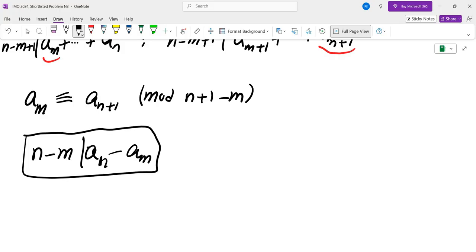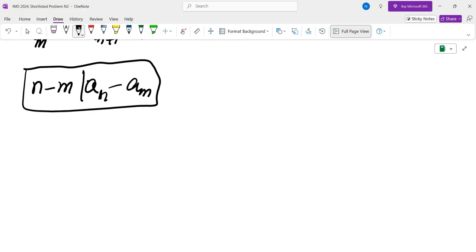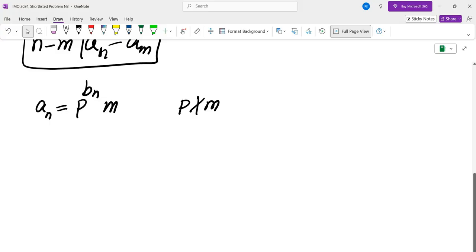Now the second observation is that because we also have the exact same thing for the geometric means, we have the exact same condition for the exponents as well. So if I look at the nth term of this sequence, AN, and write it down as P to the power of BN times some other number when P doesn't divide M, then I can argue the exact same thing for BN as well. So N minus M divides BN minus BM.